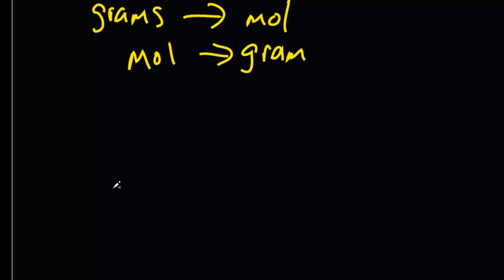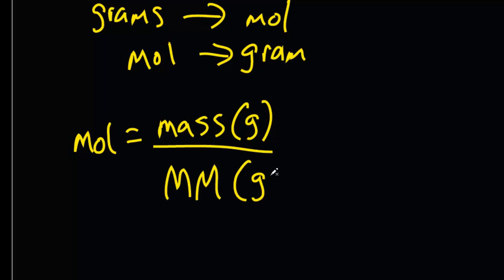So how do we convert grams to mole and mole to grams? Well, this is our magic formula in chemistry. You're going to see this all the time. Mole equals mass in grams over molar mass, which is grams per mole.